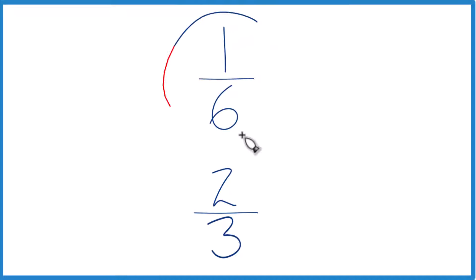Let's compare the fractions 1/6 and 2/3. You could divide 1 by 6 to get a decimal, divide 2 by 3 to get a decimal, and then compare the decimals.